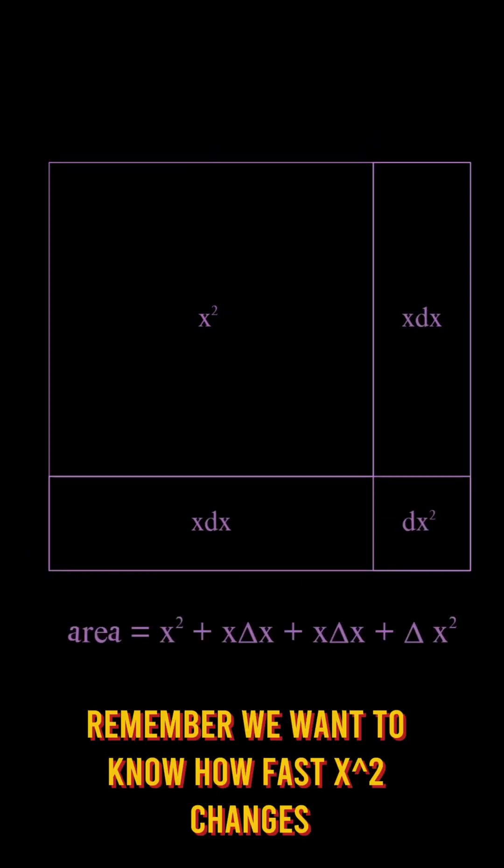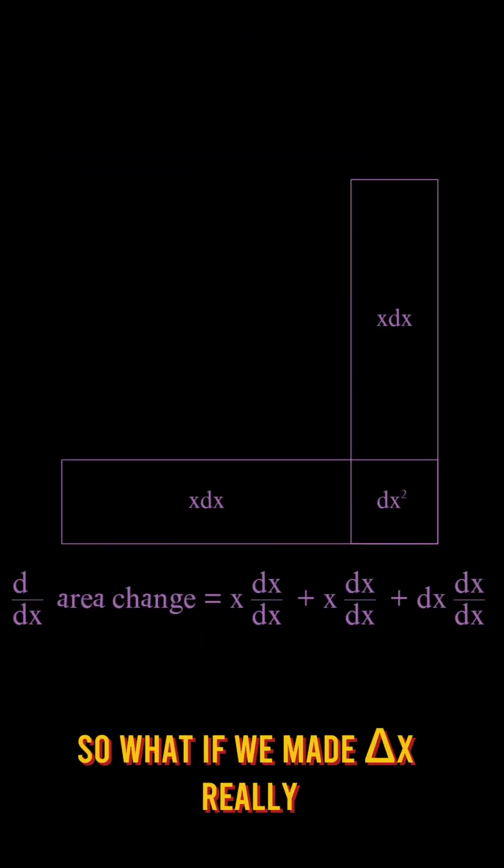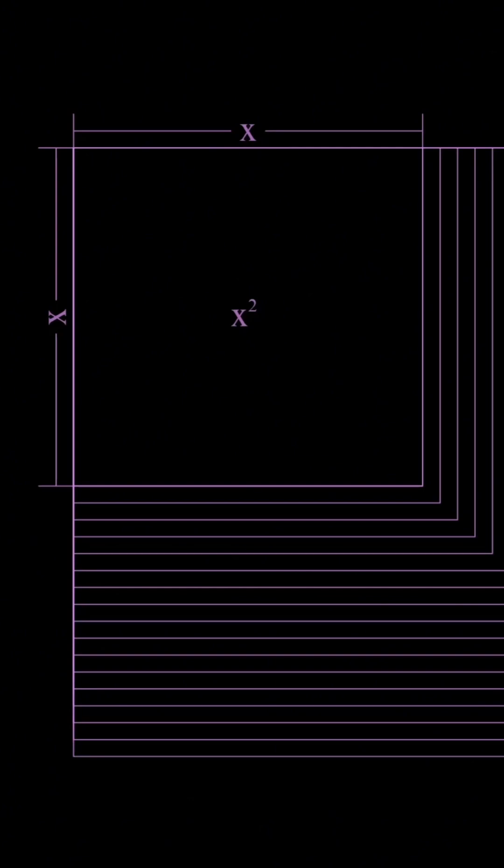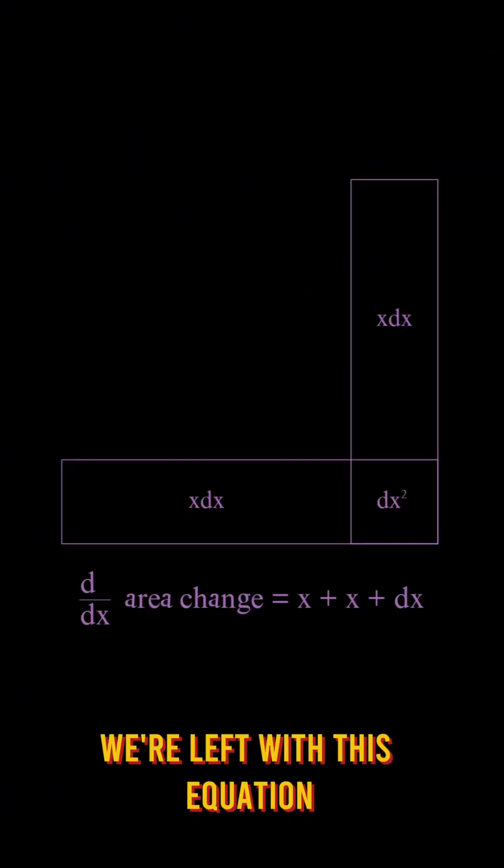Remember, we want to know how fast x squared changes as dx changes. So what if we made dx really, really tiny? We are left with this equation.